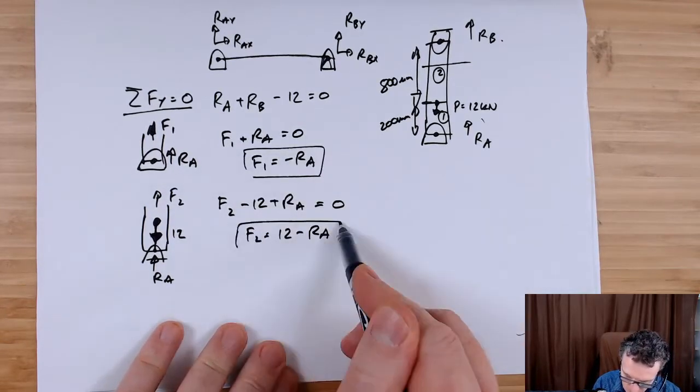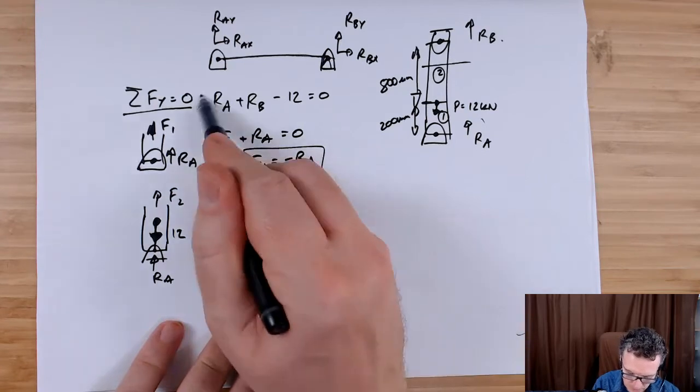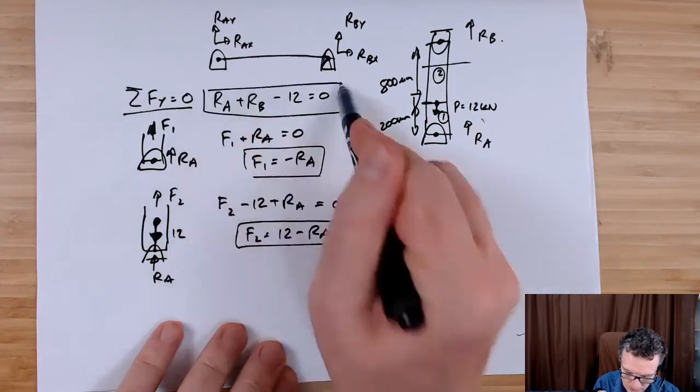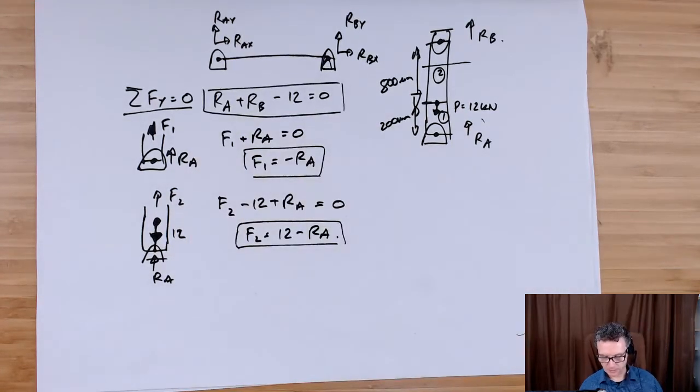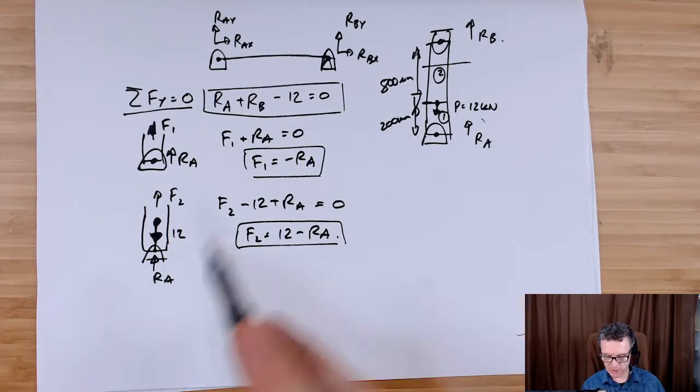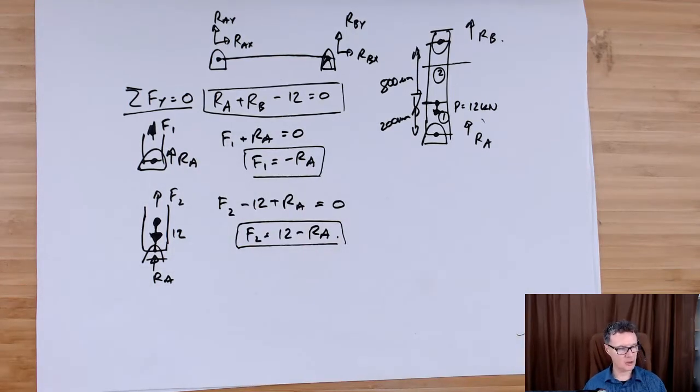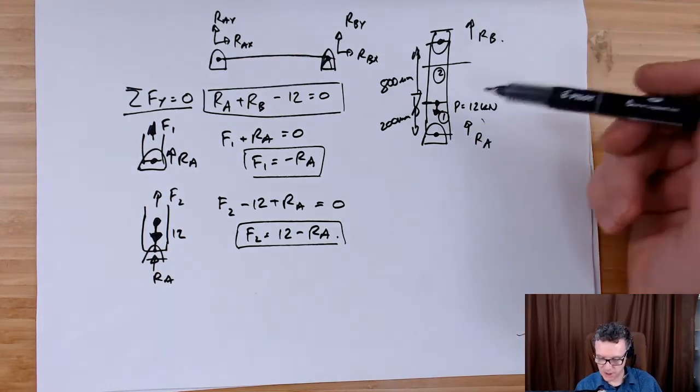Now I've got equation one, equation two, and equation three, and I've got how many unknowns? One, two, three, four. So I've got four unknowns and three equations. So I need another equation. Where's that going to come from?